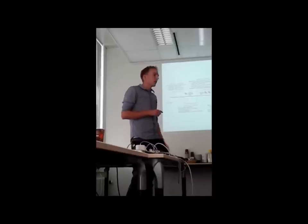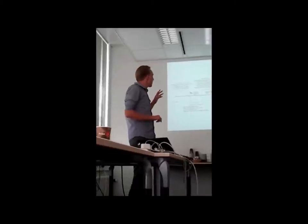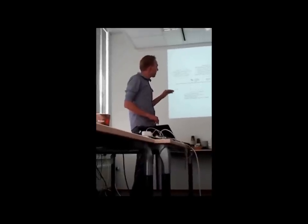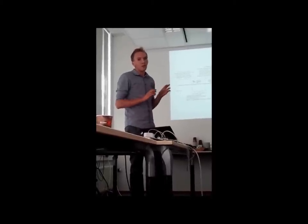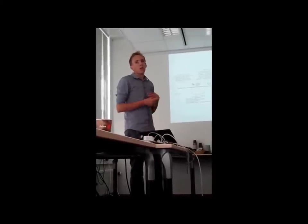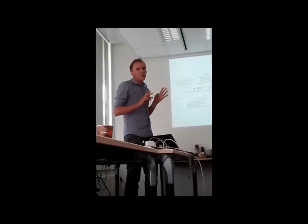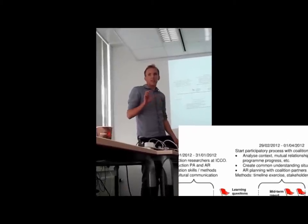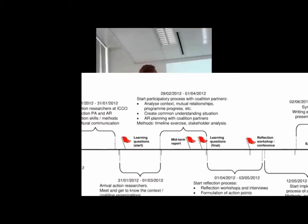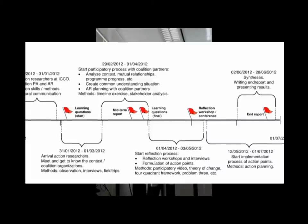After the first introduction period, a period began where we really started to analyze the context: what are the relationships between the different organizations, how do they work together, what are the results so far. The analysis of this context also forms the start of a reflection process — what does this mean, why are the relationships like this. We did that using several reflection workshops and conferences, using methods from participatory video to theory of change with a four-quadrant model and problem tree. This reflection process resulted in action points in all the cases.